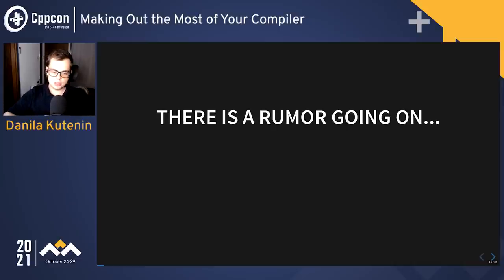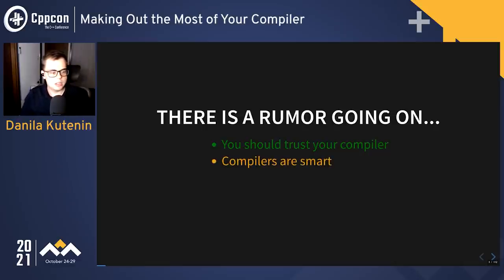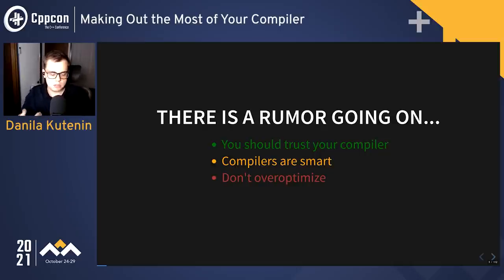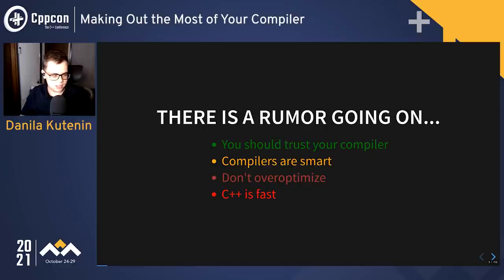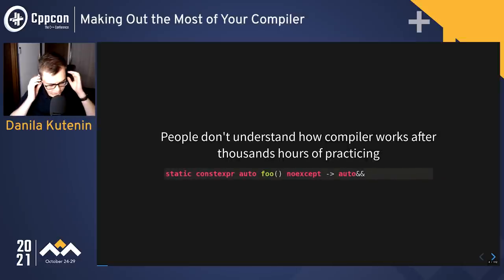There is a rumor going on among engineers who write C++ that you should trust your compiler — that's true and reasonable. Compilers are smart and can do some weird optimizations. Don't over-optimize; don't do any premature optimizations. Make it work first, then make it fast. And the biggest rumor is that C++ is fast — probably one of the fastest languages on the market. Today, I'm going to debunk all four points in some way or another.